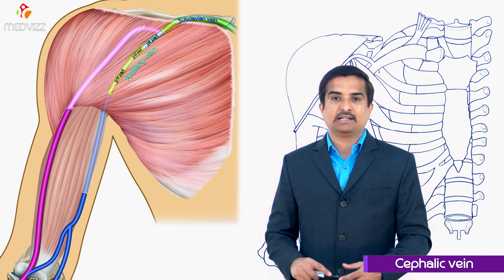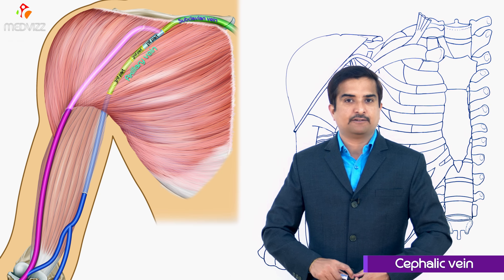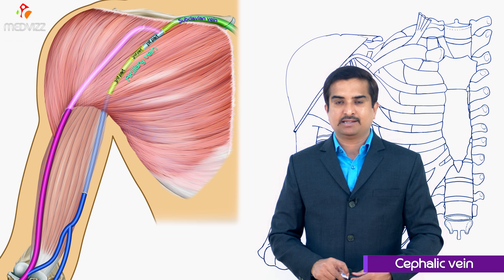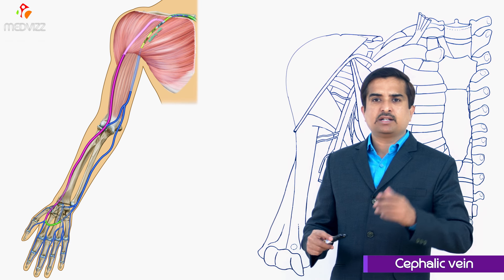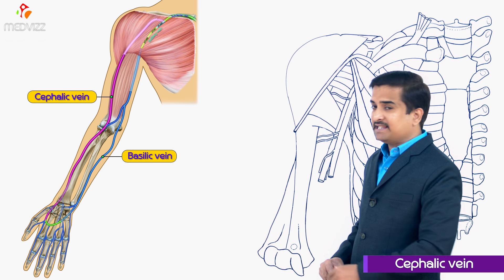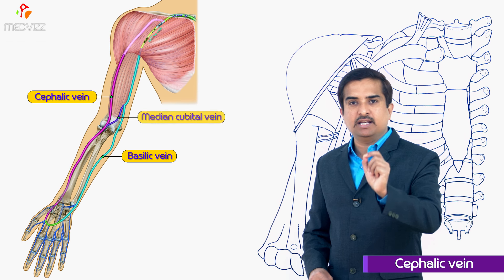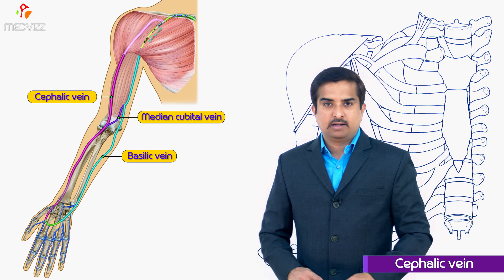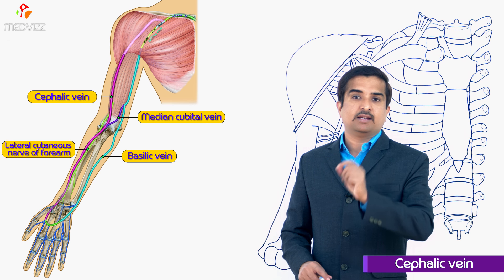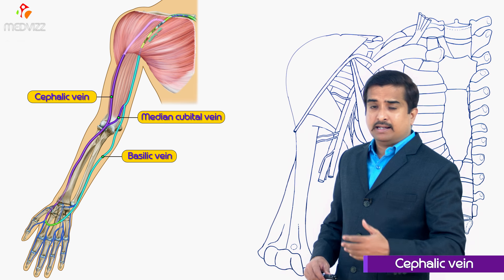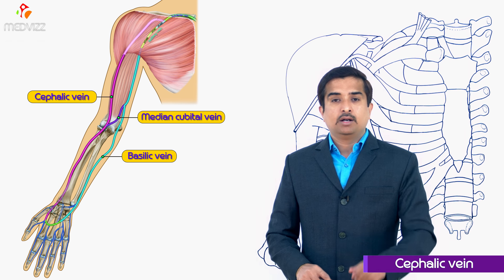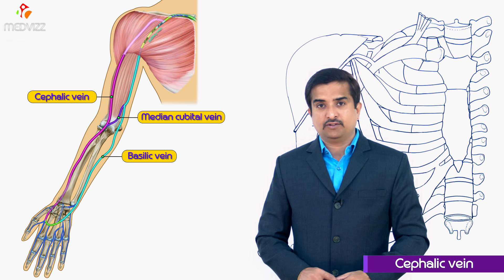Now for important points related to the cephalic vein: at the elbow, a greater amount of blood from the cephalic vein is shunted to the basilic vein through the median cubital vein. The cephalic vein is accompanied by the lateral cutaneous nerve of the forearm, and it is a pre-axial vein of the upper limb, corresponding to the great saphenous vein of the lower limb.